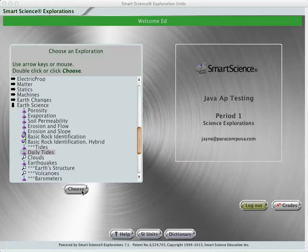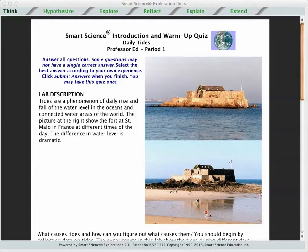So without any further ado, let's get started with the Smart Science Lab on Daily Tides. Smart Science consists of five basic parts, plus an extra credit for each lab. The Think page is an introduction, hypothesize where the students get to make predictions, explore the lab, reflect with a quiz, and explain their results in a lab report.